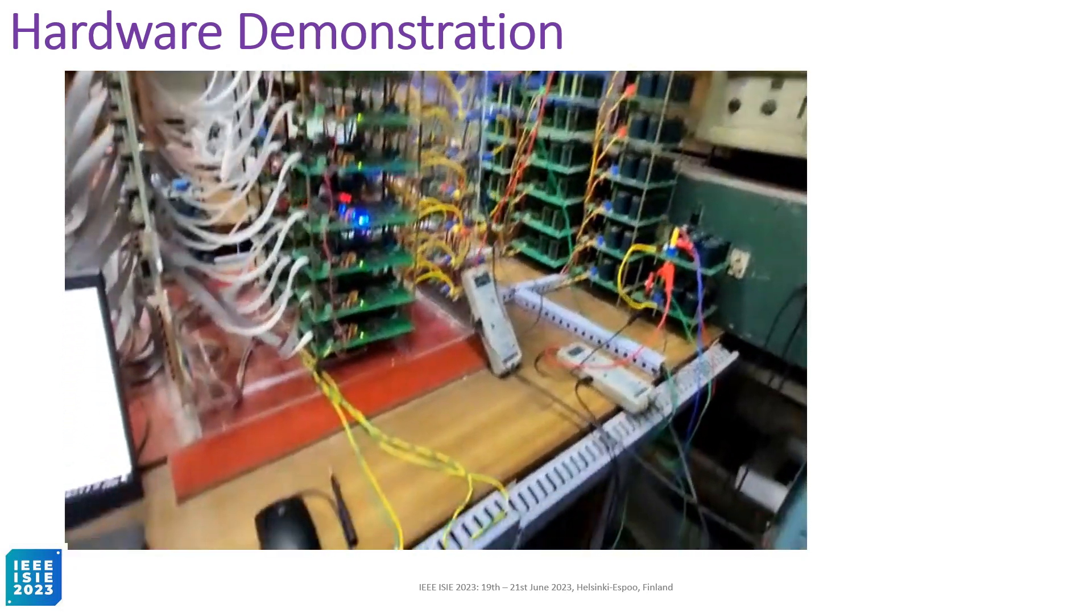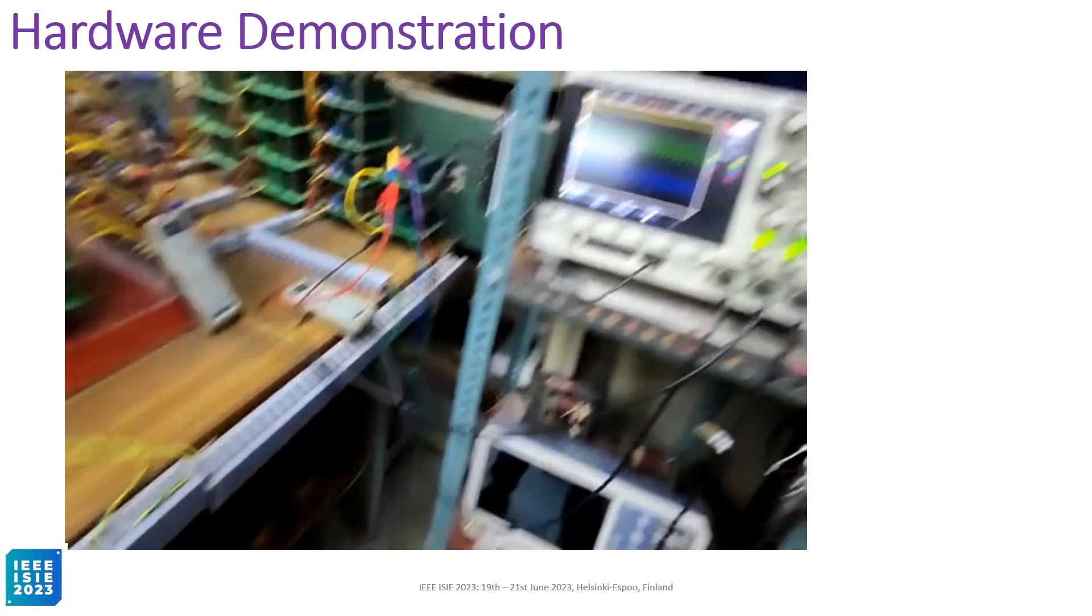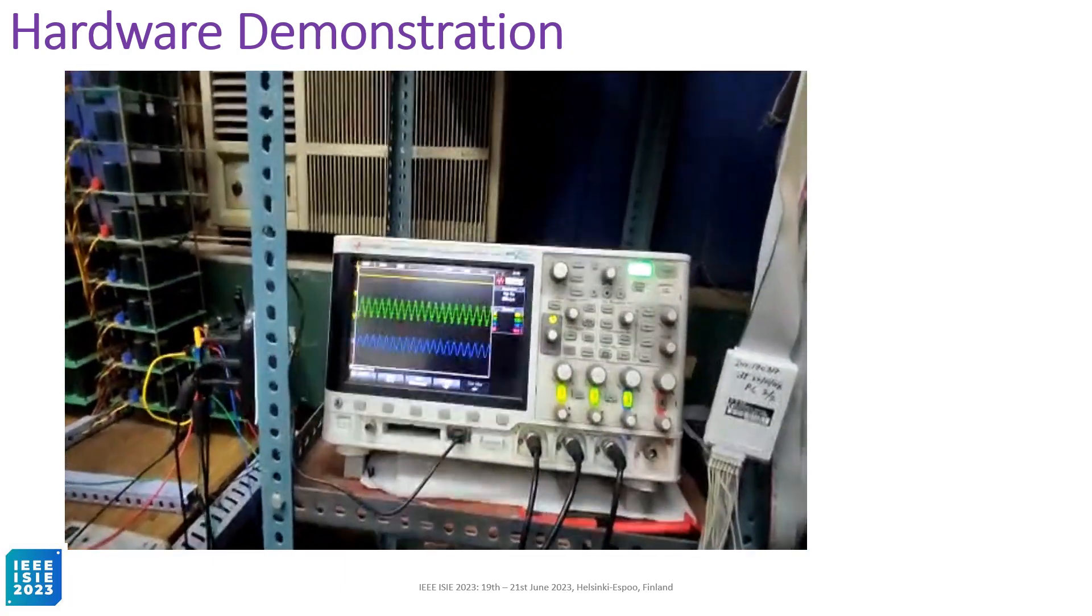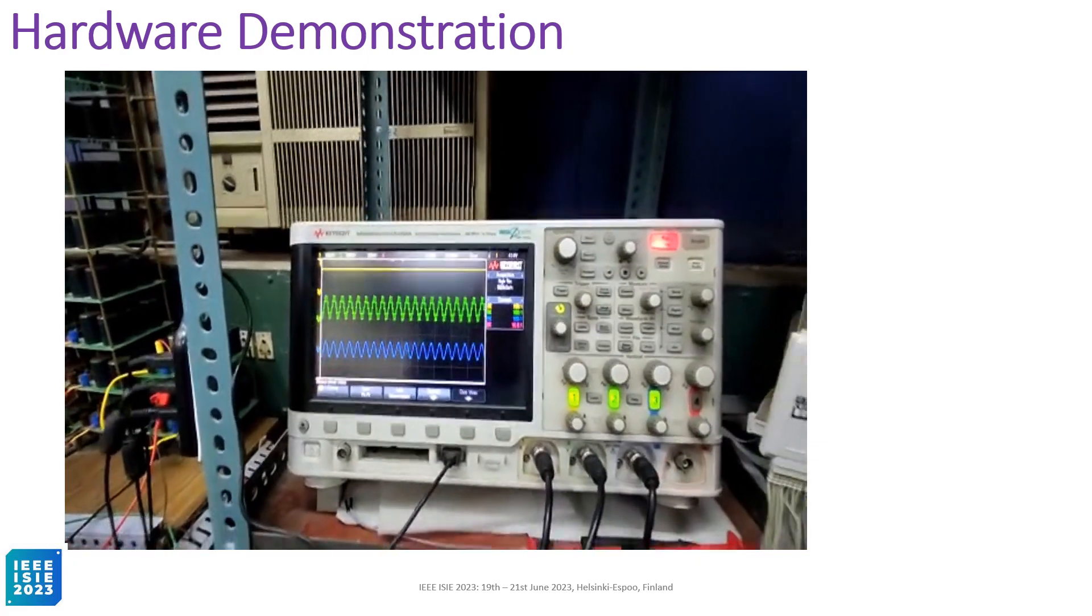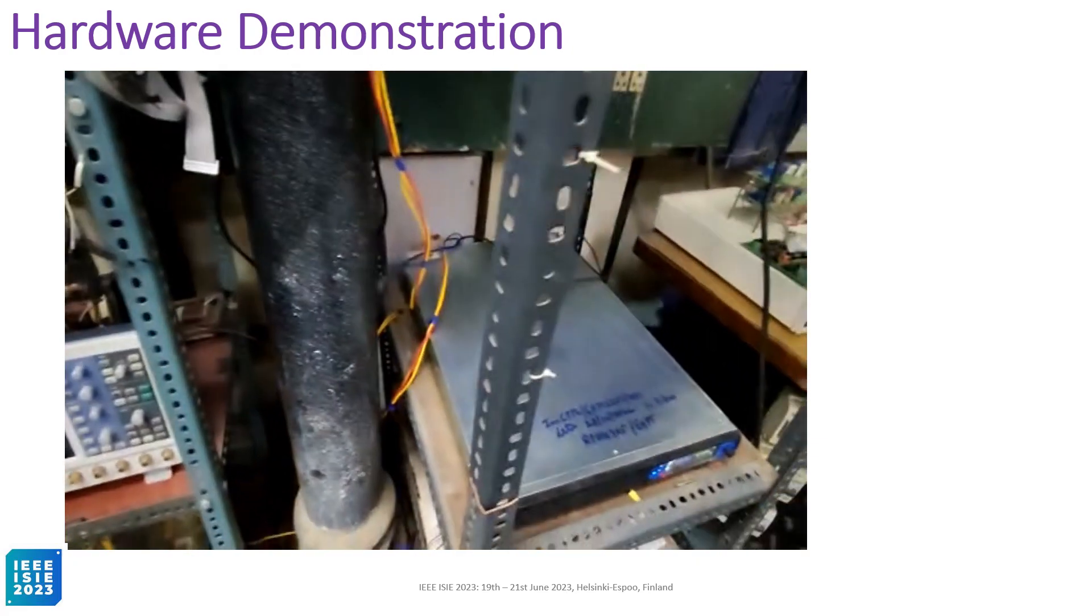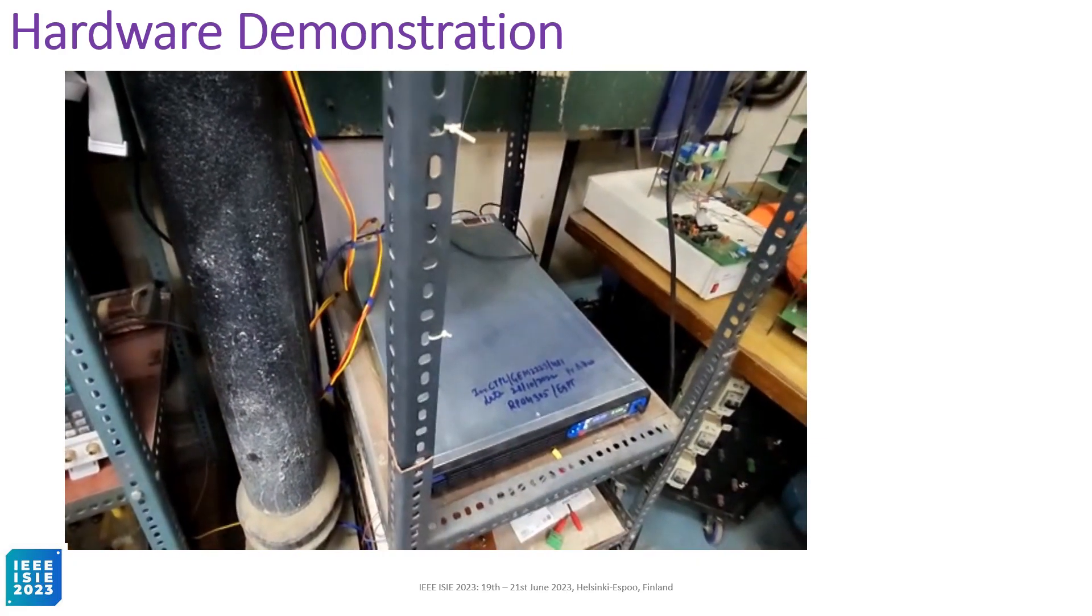In the oscilloscope, you will see the first one is the MVDC side voltage, second one is the arm voltage, and third one is the primary side voltage of the transformer. In the prototype, we have used 4 number of sub-modules, so the arm voltage is having 5 levels.